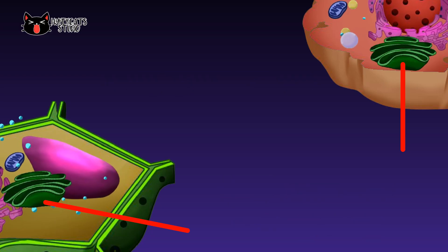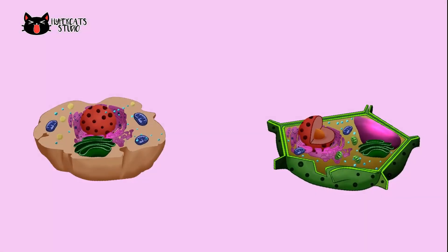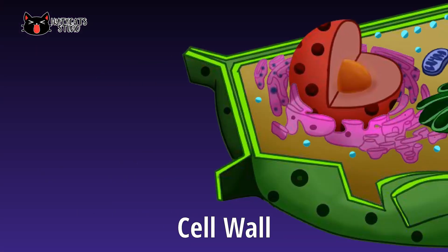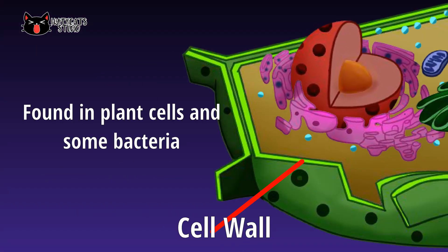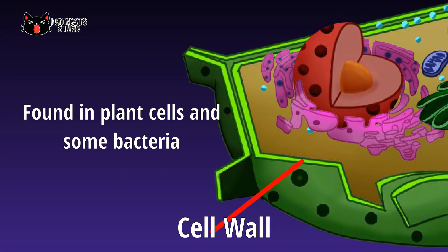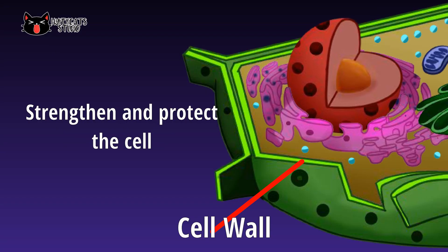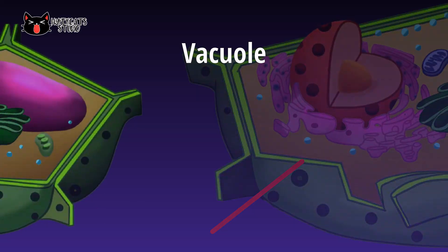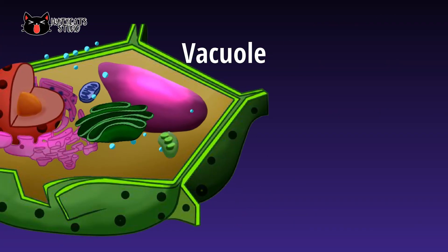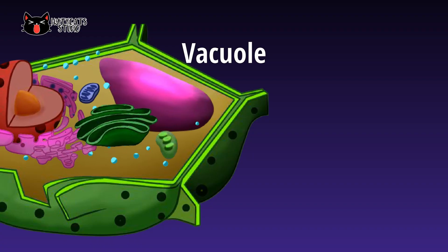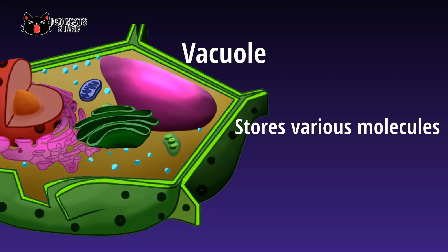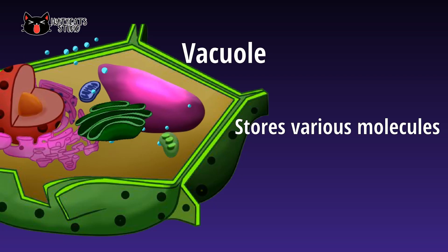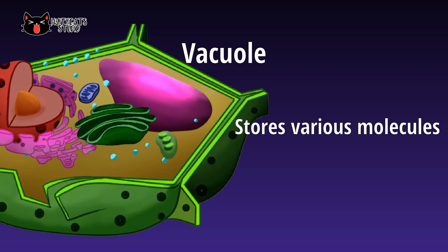Some organelles are only present or prominent in plant cells. The cell wall is one of the most important components of plant cells — it surrounds the cell membrane and serves to strengthen and protect the cell. Vacuoles are spaces inside the cell that do not contain cytoplasm, surrounded by a membrane and filled with fluid. Vacuoles store various molecules including enzymes, waste products, water, and food material depending on the type of cell.